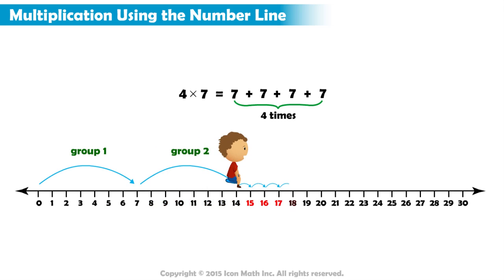We count another 7 to get our third group. And finally we count another 7 to get our last group.